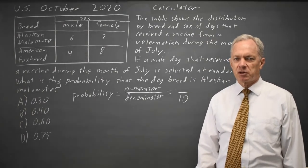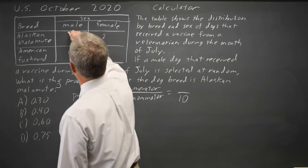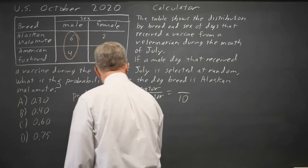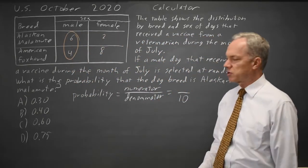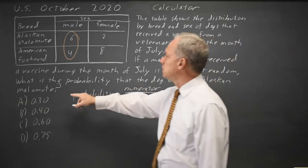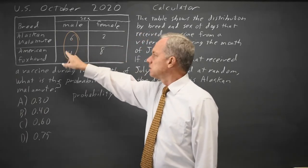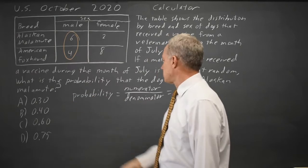Once you have your denominator, among those individuals that counted toward the denominator, the question is which ones are we counting as a success for our probability. What is the probability that the dog is a Malamute? So the Malamutes among those that are male is 6.